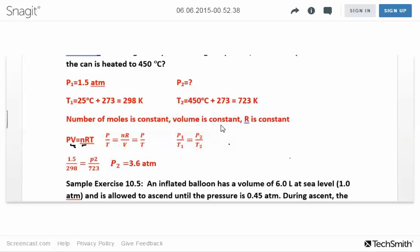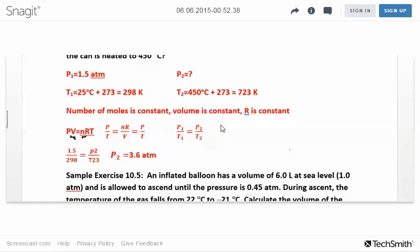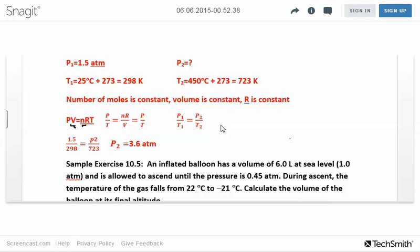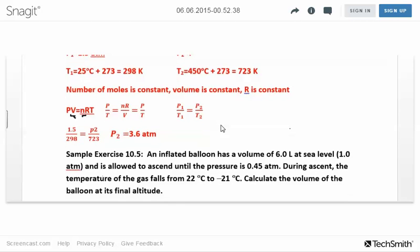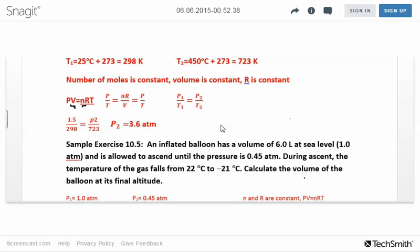Pressure doesn't have to be in atmospheres, though it's never wrong if it is. Atmospheres or torr would work. Your pressure units don't really matter, but your temperature has to be in Kelvin—and your pressure units must be the same on both sides. Work that out and you should get 3.6. I had 1.5 over 298 equals P₂ over 723.